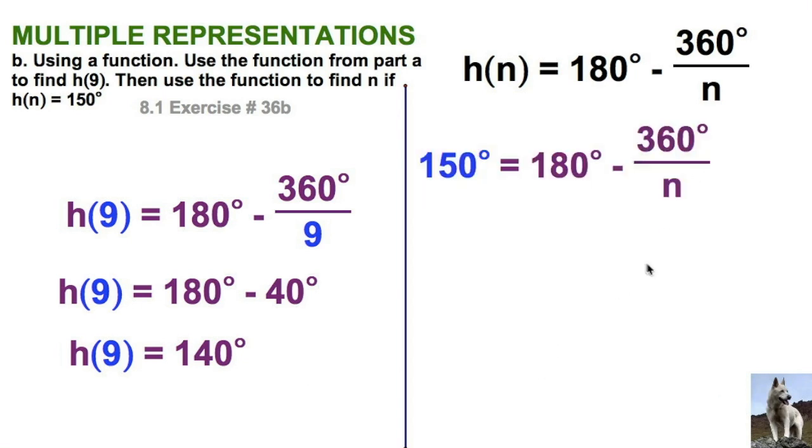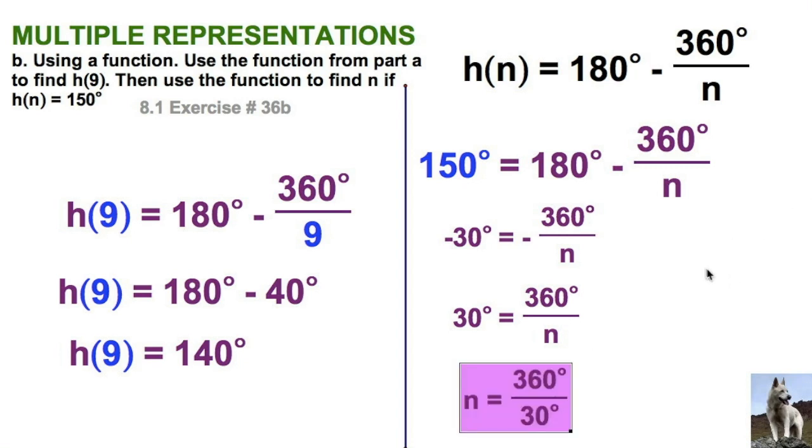We're also asked, how about if we know that h(n) is equal to 150? Well, I'm going to subtract the 180 from both sides. I don't like that negative, so I'll just multiply everything or take the opposite of both sides. Then of course I can do the old switcheroo, swap the extremes, and we solve, or divide. Notice the units divide out as well. There's no more degrees. It's just 12, there's 12 sides, period.